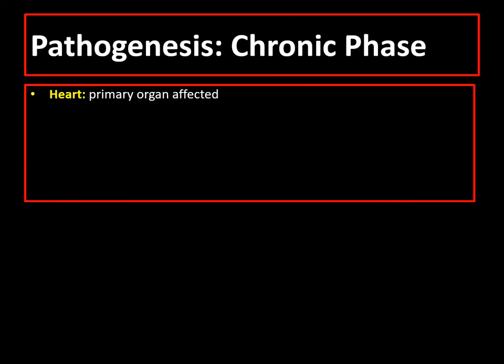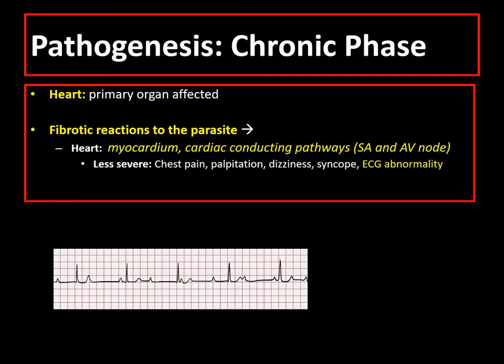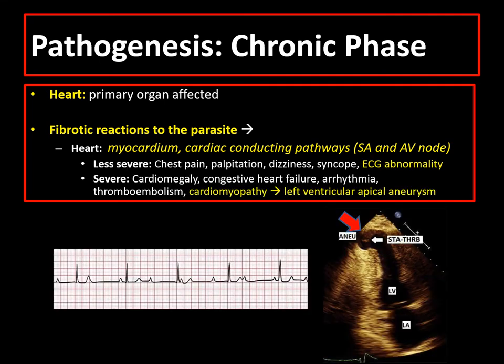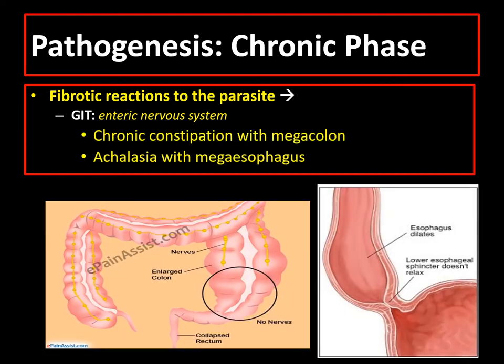In the chronic phase, the heart is the primary organ affected. There is fibrotic reaction to the parasite. If it is in the heart, fibrotic changes cause injury to the myocardium or the cardiac conducting system, causing ECG abnormality like complete heart block, cardiomyopathy, or even resulting in left ventricular apical aneurysm. If it is in the GIT, it affects the enteric nervous system, causing megacolon and/or achalasia.